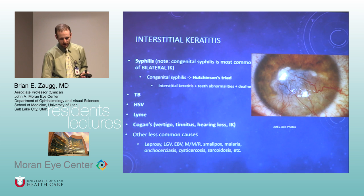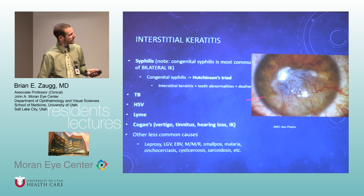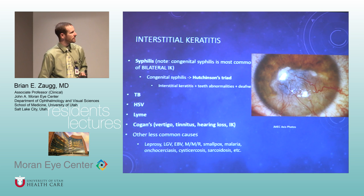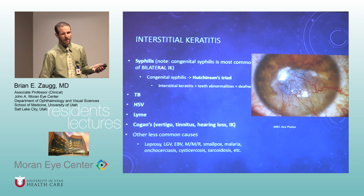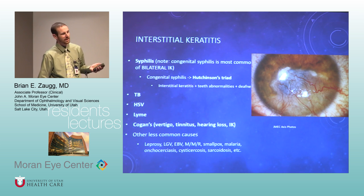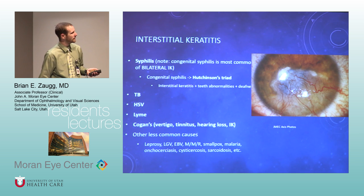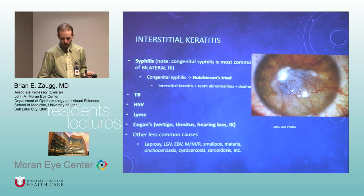Interstitial keratitis — herpes is the most common cause. Syphilis is less common, but if it's bilateral, you're thinking syphilis. With congenital syphilis, you have Hutchinson's triad: teeth problems, corneal disease, and deafness. Lots of uncommon things can cause it as well.